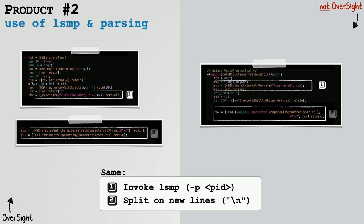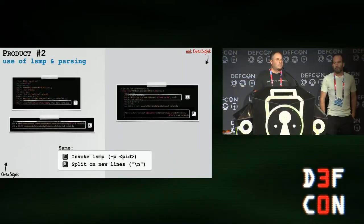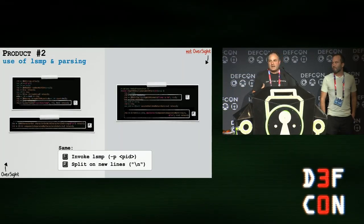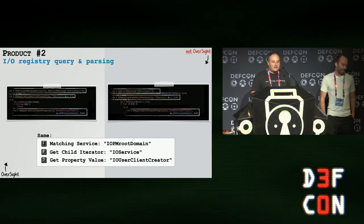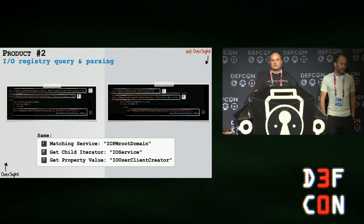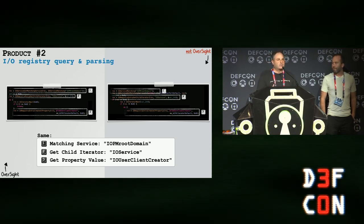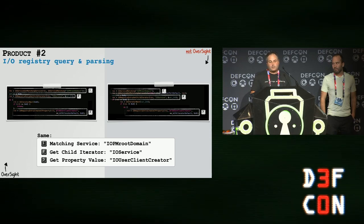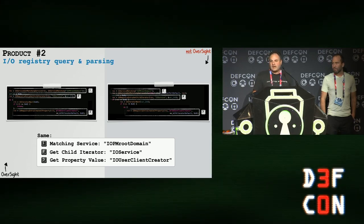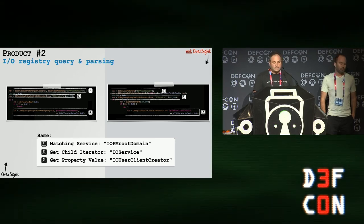Looking at the second product: the LSMP processing shows a little bit of regex, so we give them kudos for trying to improve performance — maybe they saw some bugs and wanted to fix them. But it's not just that one aspect. When we continue further, tying all these together gives a better picture of what's going on. The IO registry again shows exactly the same processing, with the IO PM root domain going down to the correct key-value pairs that we see in Oversight.